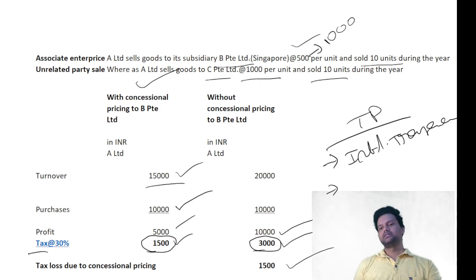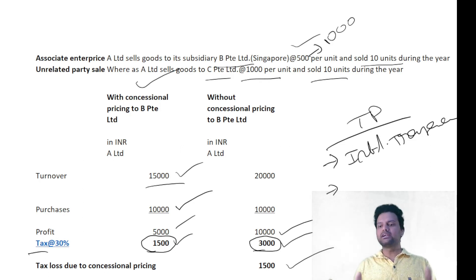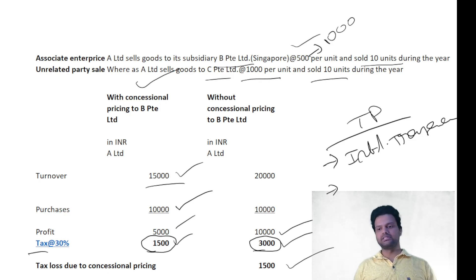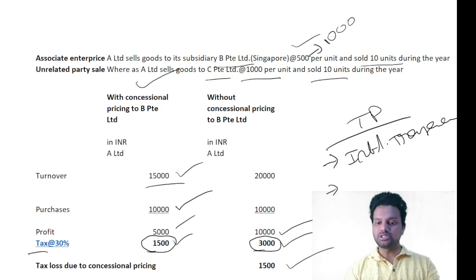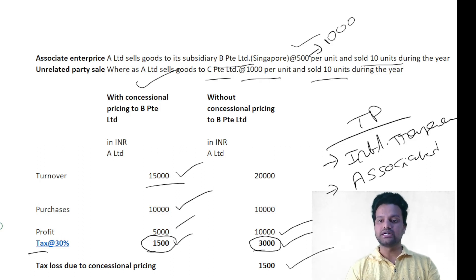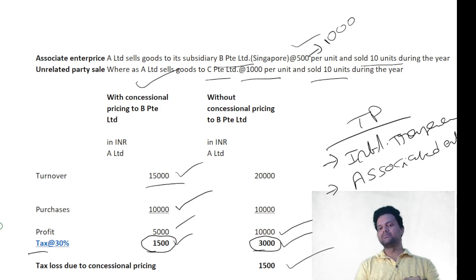Condition number two: if you are selling to a stranger — an unrelated person — do you give any discount or concessional pricing? No. But when selling to a related party, a price gap will appear. So condition number two is that these provisions are applicable only when a transaction occurs between one company and another entity that are associated with each other — that is, associated enterprises. In this case, A Limited and BPT are associated because BPT is a subsidiary of A Limited.